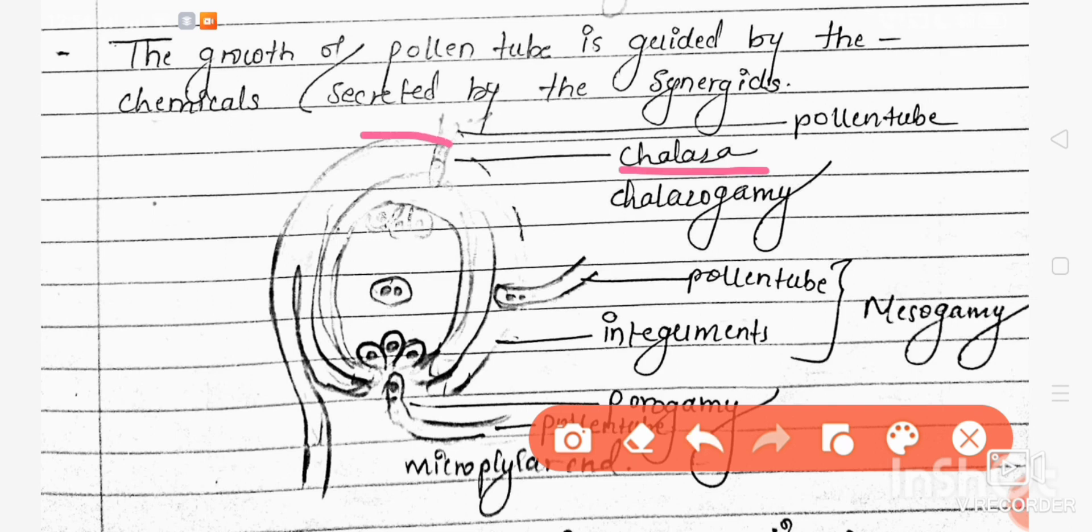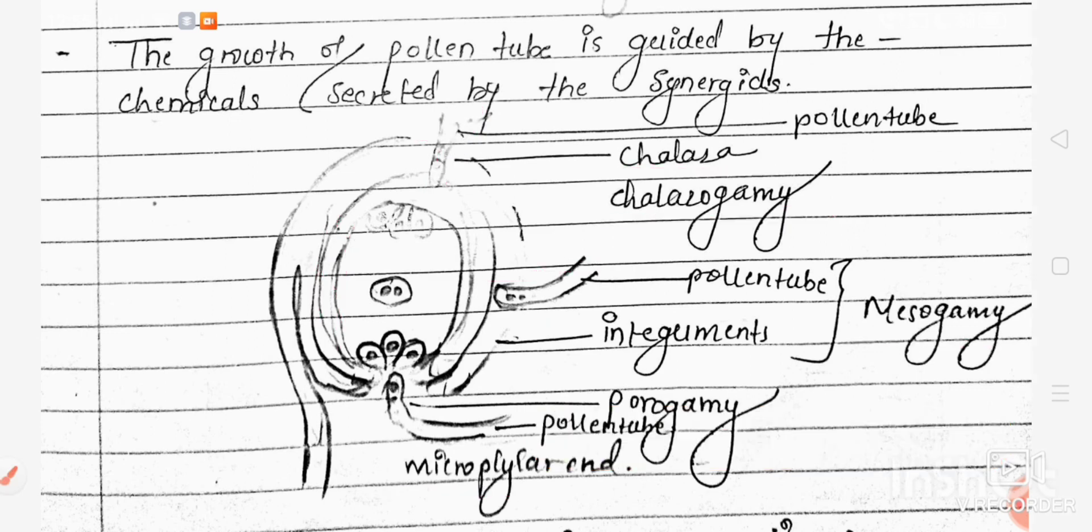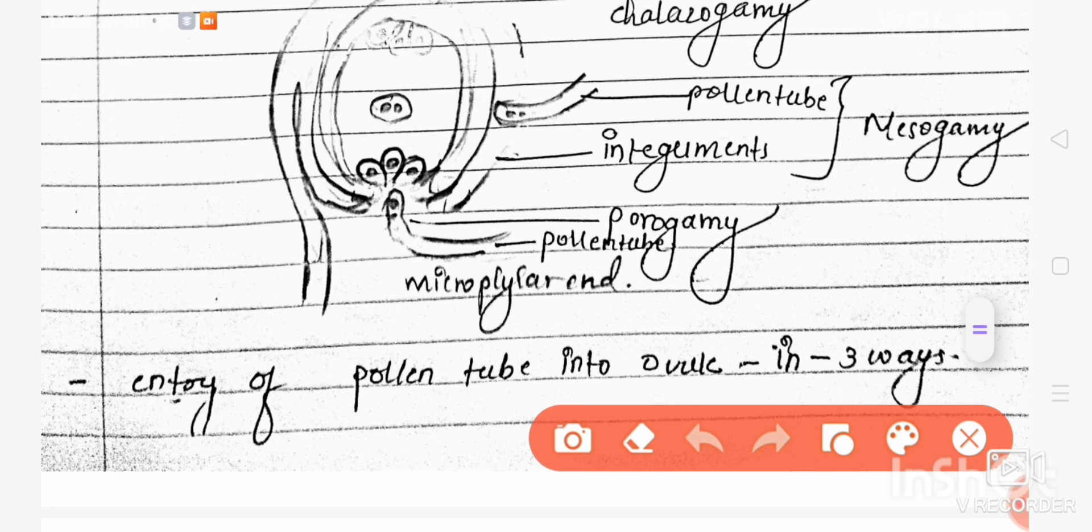First, we can see at the apex there is the chalaza. If entry is through chalaza, it is known as chalazogamy. If it enters through the integument, it is called mesogamy. And in most cases it enters through the micropylar end, that is the opening, which is called porogamy. Most of the time the pollen tube enters through the micropylar end.